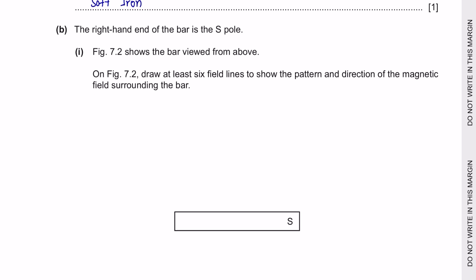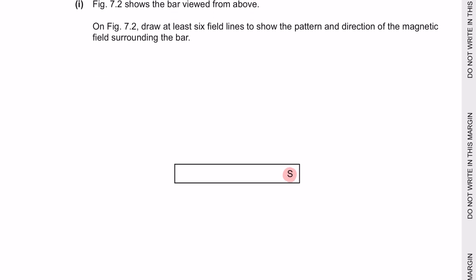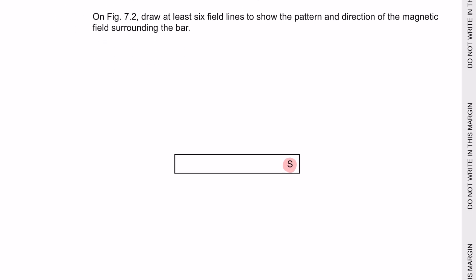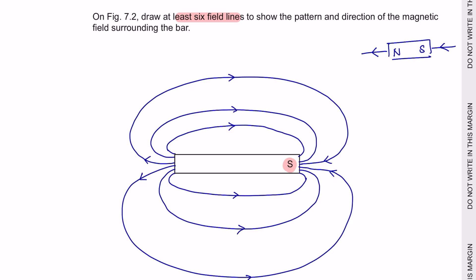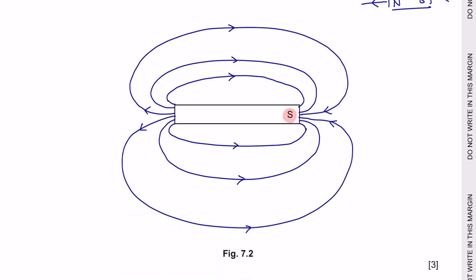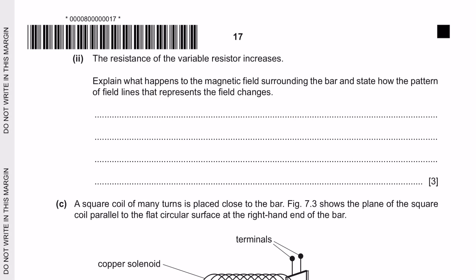Next question: The right-hand end of the bar is the south pole. Figure 7.2 shows the bar viewed from above. On figure 7.2, draw at least 6 field lines to show the pattern and direction of the magnetic field surrounding the bar. Remember that magnetic field lines always travel out of the north pole and enter the south pole. So these are what the 6 lines should look like. Remember that you should not have any lines that overlap each other.